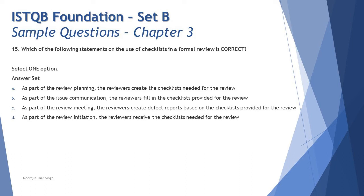Option B says: as part of the issue communication phase, the reviewers will fill in the checklist provided for the review. If a checklist is used in the review process, the time for utilizing it is during the individual preparation phase, where reviewers go through the document with the checklist alongside — not during issue communication. So B is incorrect. Option C says: as part of the review meeting, the reviewers create defect reports based on the checklist. Again, the individual preparation phase is where you use the checklist, so C is also wrong.